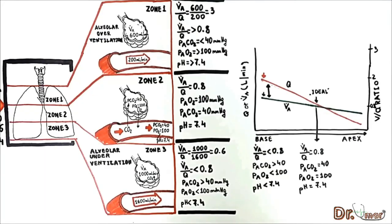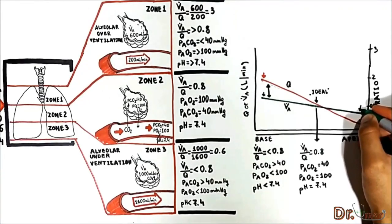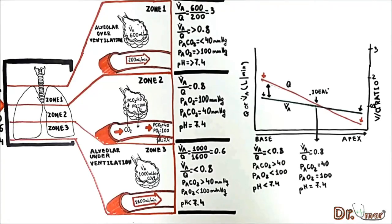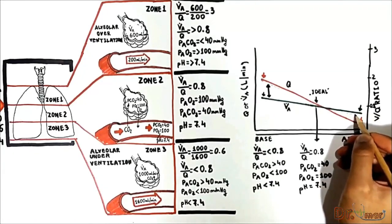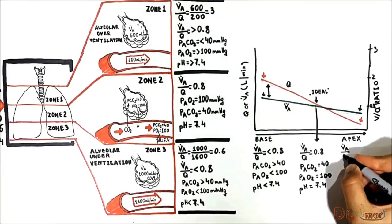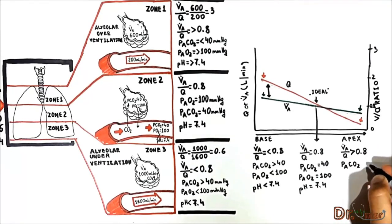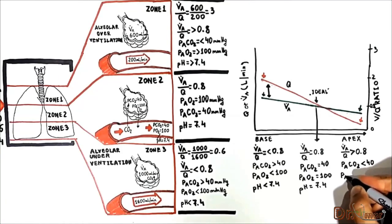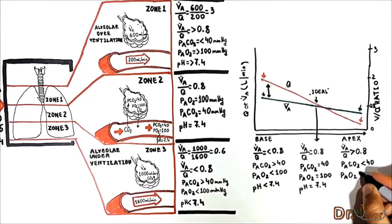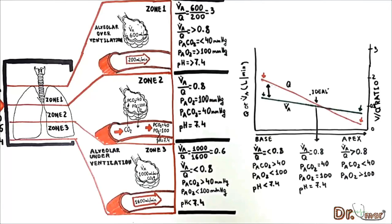At the apex we have the lowest perfusion but it is not enough to match ventilation — VQ ratio is more than 0.8 — so alveoli are overventilated. When alveoli are overventilated, alveolar PCO2 decreases to less than 40; if PCO2 decreases, PO2 increases above 100; and as PCO2 decreases, pH increases above 7.4.